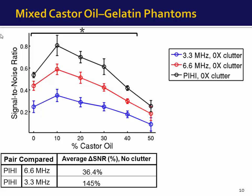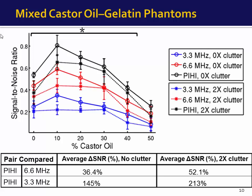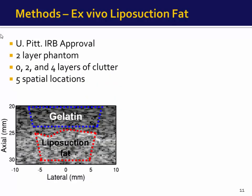With the introduction of clutter, shown in the black dotted lines, there was a degradation in SNR for all tracking modes. However, the relative degradation was smallest for pulse inversion tracking, and as a result the SNR advantage grew to 52.1 percent over 6.6 MHz and 213 percent over 3.3 MHz.